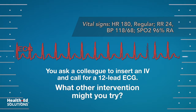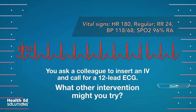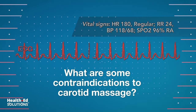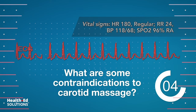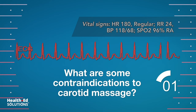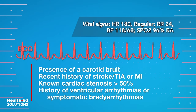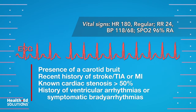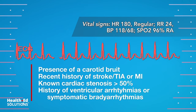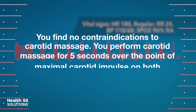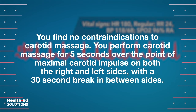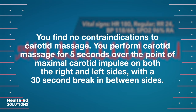What other intervention might you try? Vagal maneuvers. Contraindications to carotid massage include: presence of a carotid bruit; recent history of stroke, TIA, or MI; known carotid stenosis greater than 50%; and history of ventricular arrhythmias or symptomatic bradyarrhythmias. Finding no contraindications, you perform carotid massage for five seconds over the point of maximal carotid impulse on both the right and left sides, with a 30-second break in between sides.